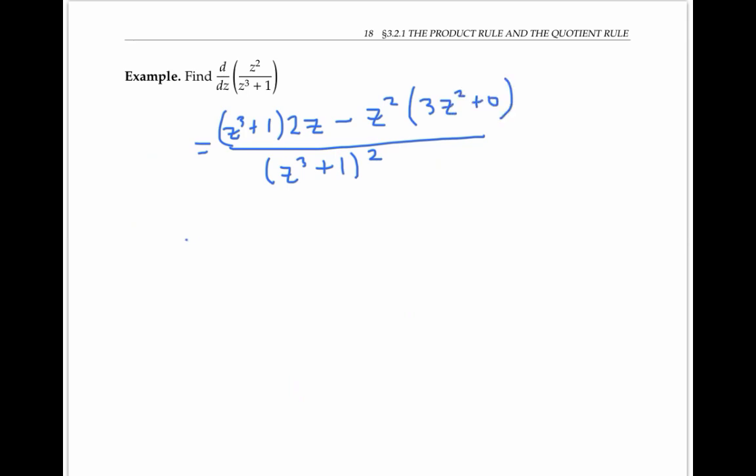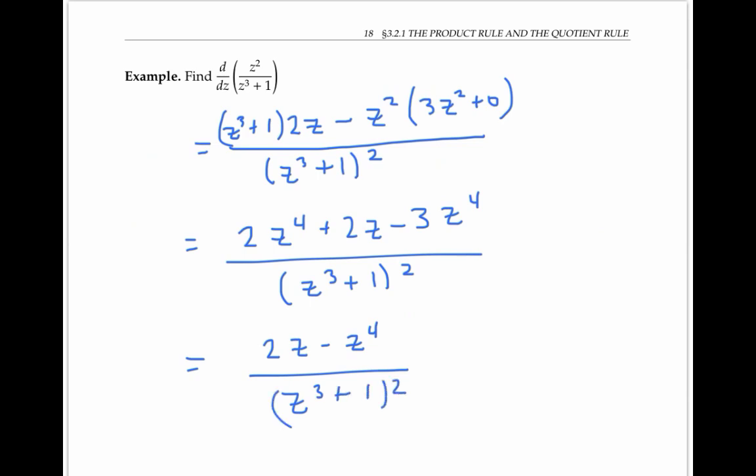I can simplify here a little bit. 2z to the fourth plus 2z minus 3z to the fourth over, I'm not going to bother multiplying out this denominator, I think it looks simpler with it factored. So when I cancel things on the numerator, I'm getting 2z minus z to the fourth over z cubed plus one squared as the derivative of my quotient.